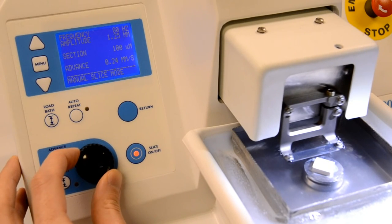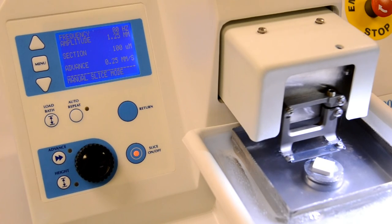Press the slice on-off key and the cutting head will start vibrating. Use the rotary knob to control the advance speed of the head through the slice.